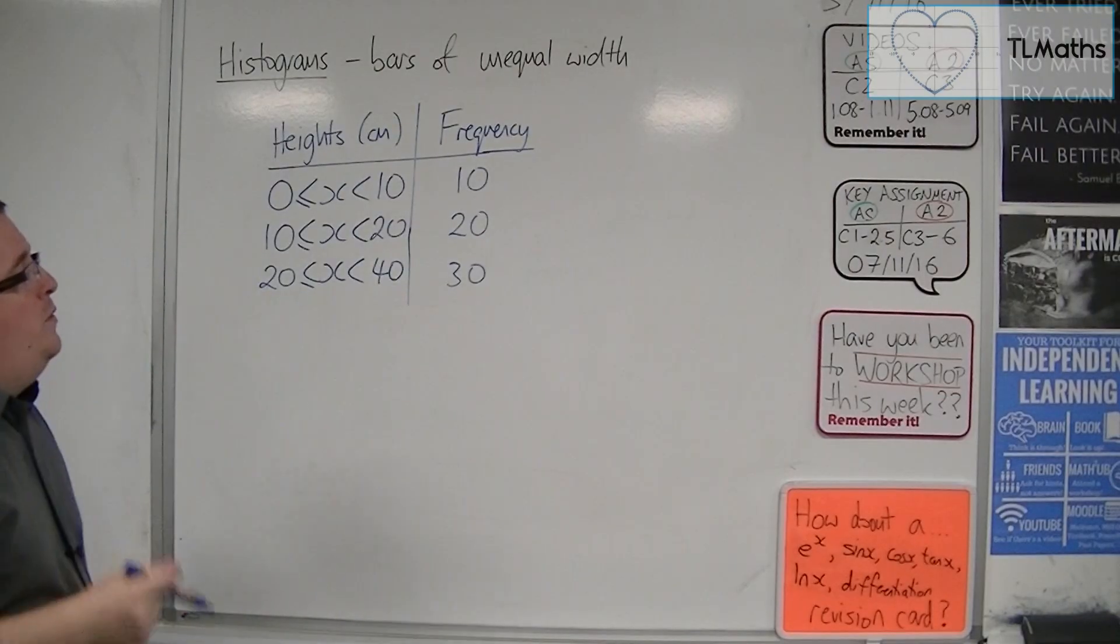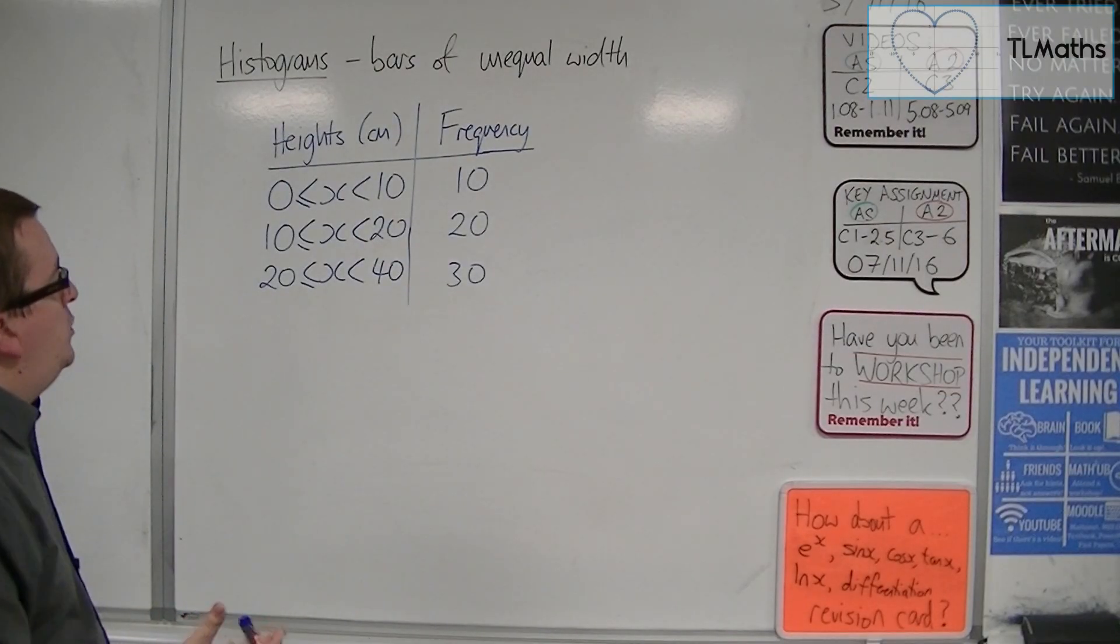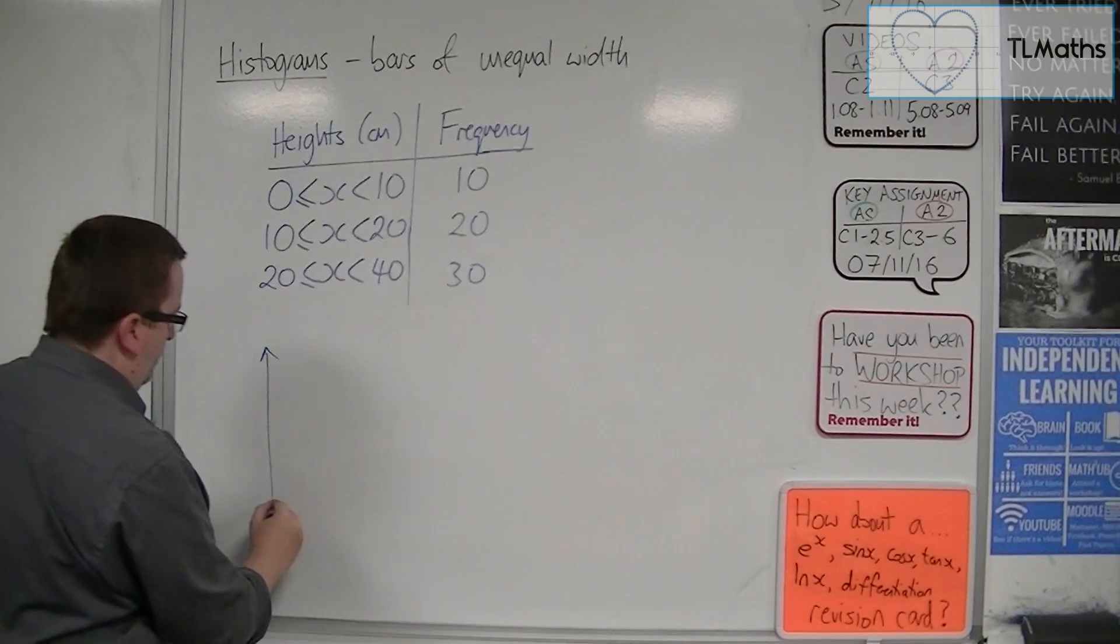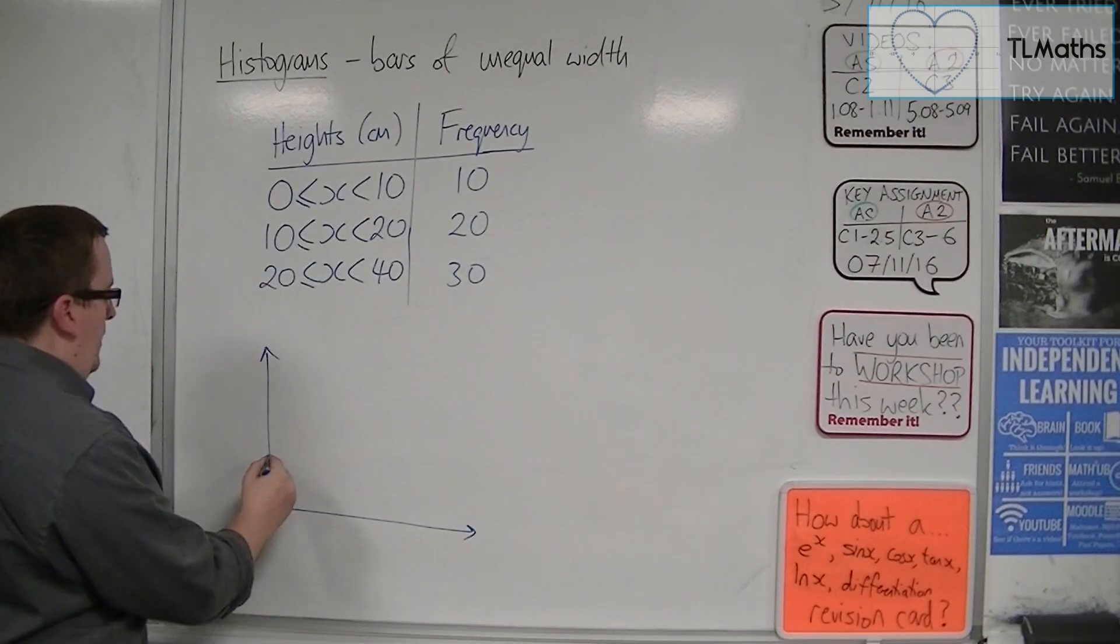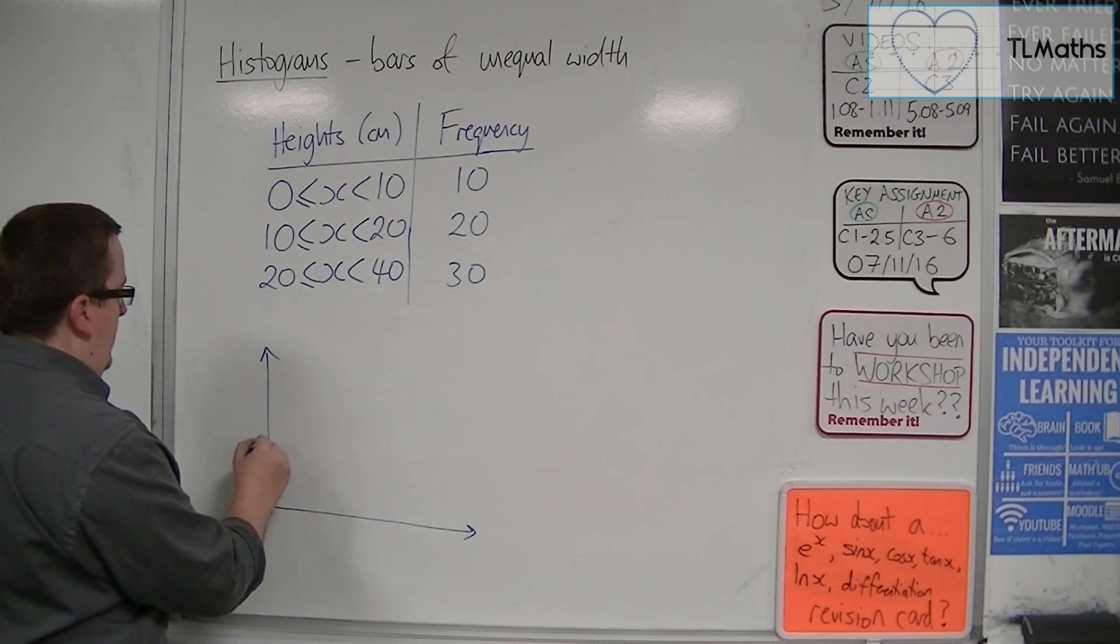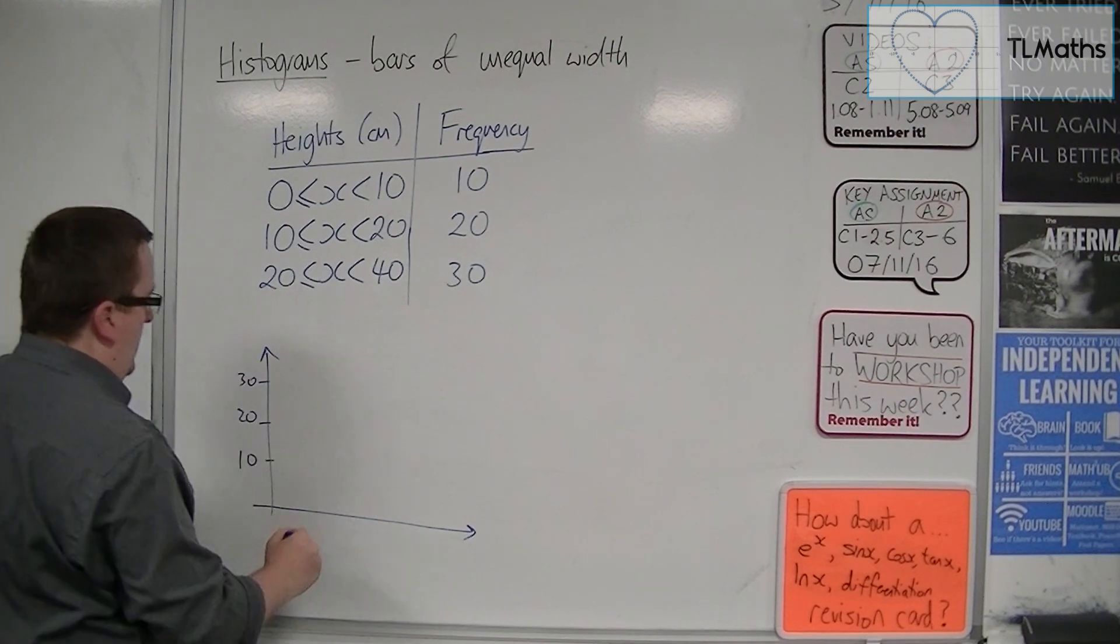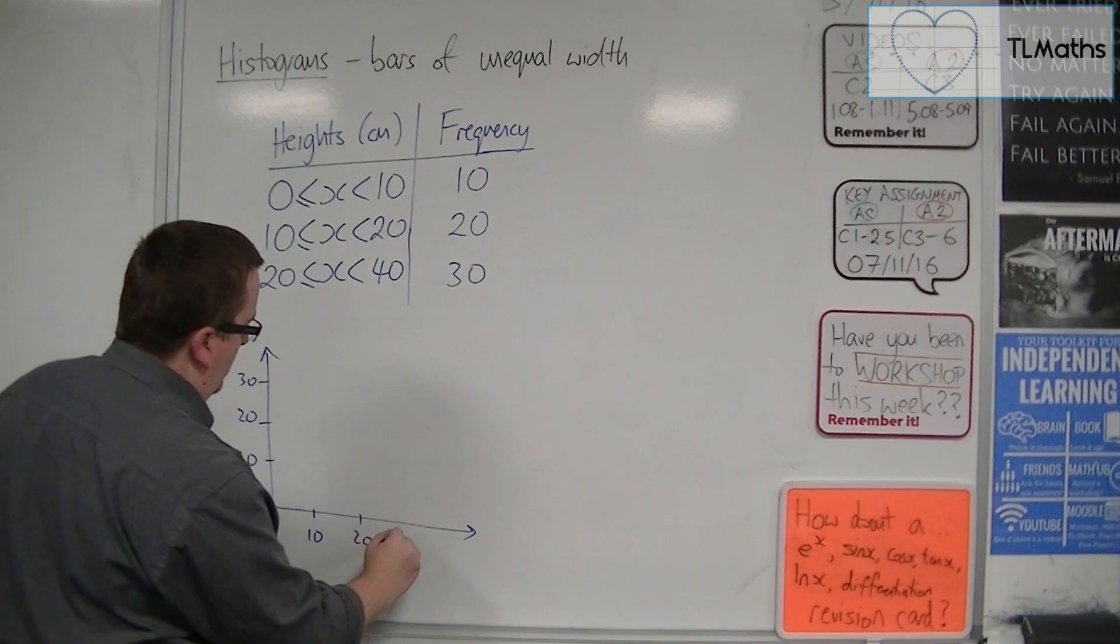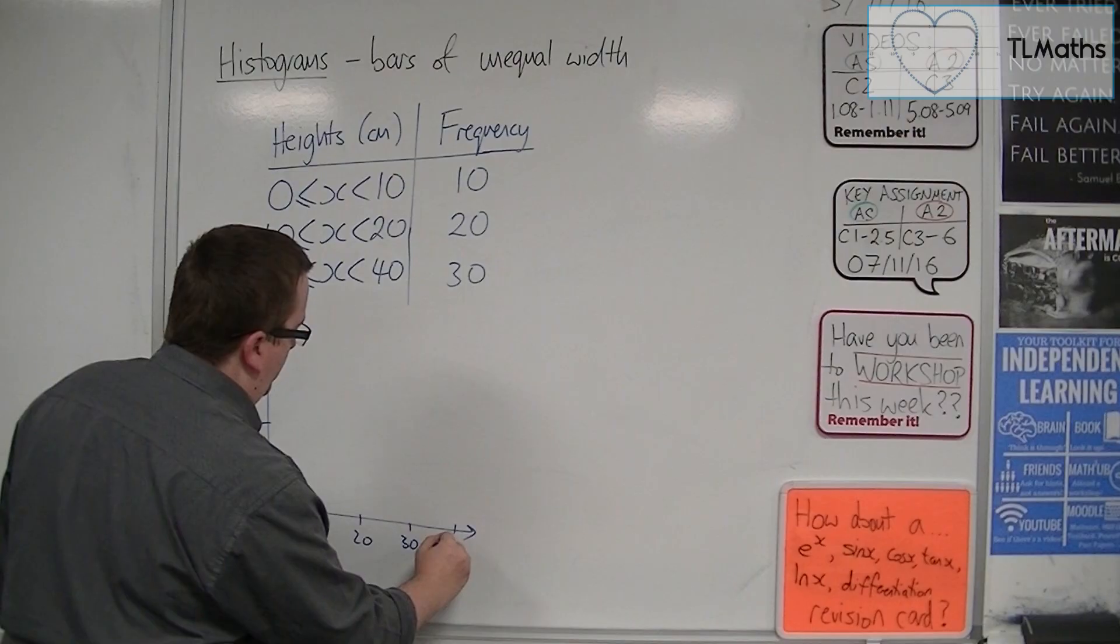So I'd still have 10, 20, 30, and I'd still be going from 0, 10, 20, there's 30, and now I need to go up to 40.